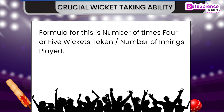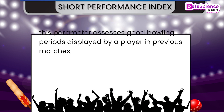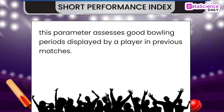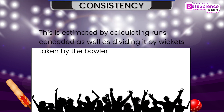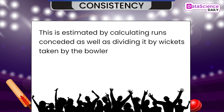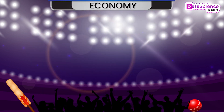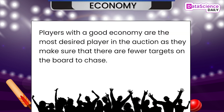Short Performance Index — this parameter assesses good bowling periods displayed by a player in previous matches. Consistency — estimated by calculating runs conceded divided by wickets taken by a bowler. Economy — players with a good economy are the most desired players in the auction, as they make sure that there are fewer targets on the board to chase.